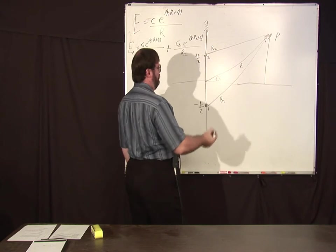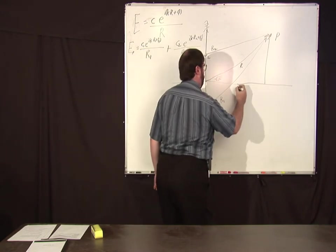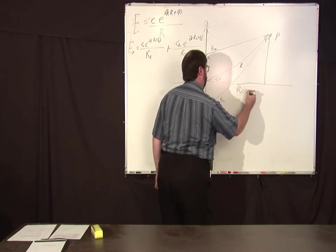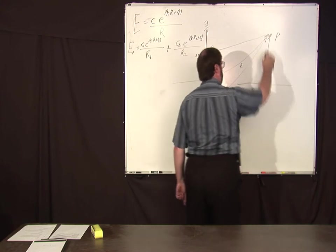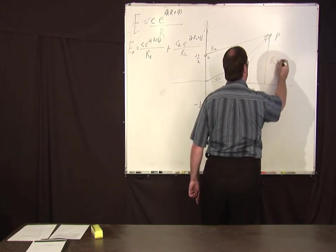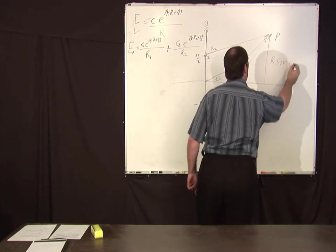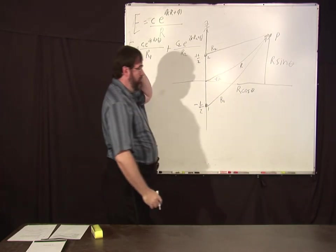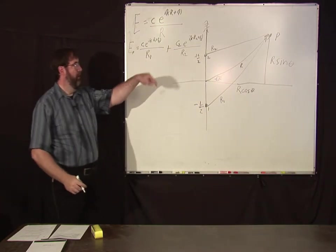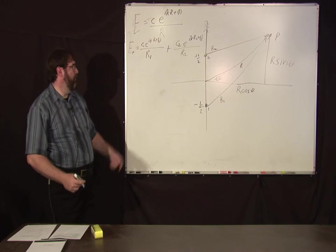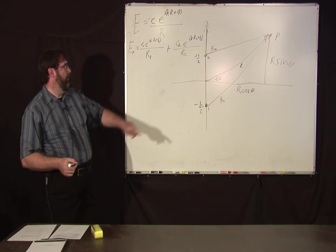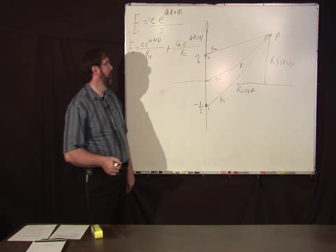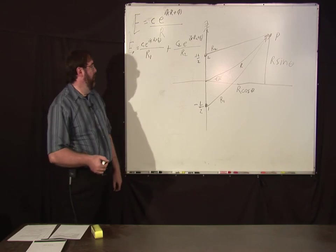Okay, because this distance here is r cosine theta, and this distance here is r sine theta, basic trigonometry. Okay, and we're interested in what the field looks like as a function of theta, or as a function of r, or function of l I should say. So what is that?